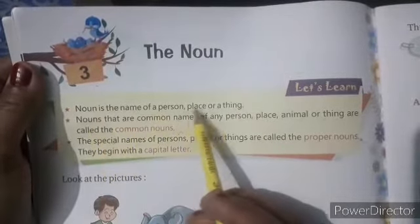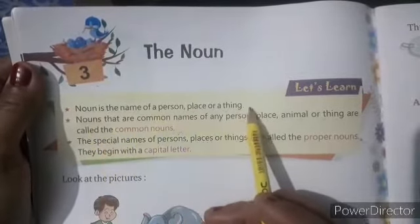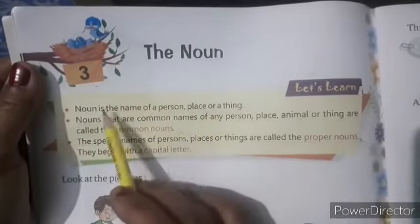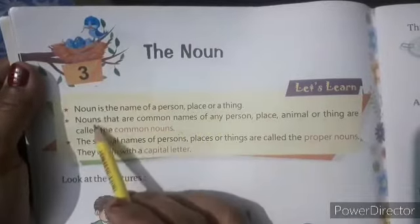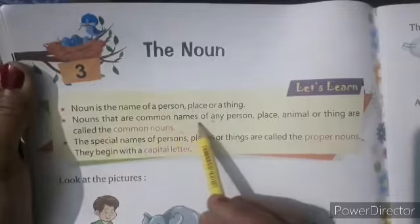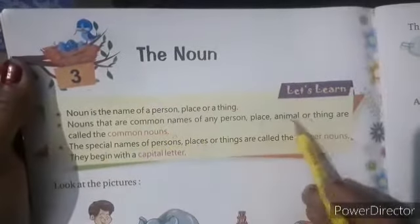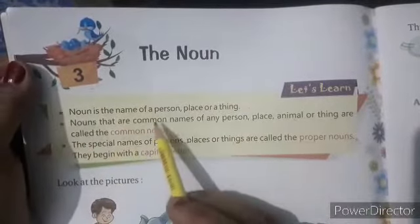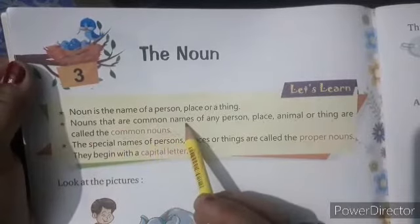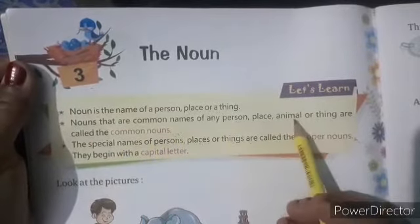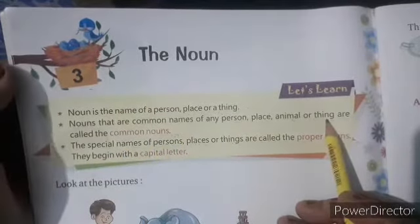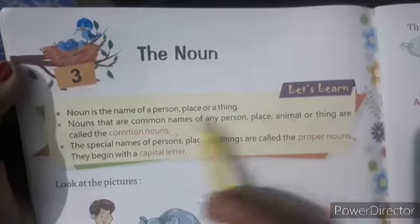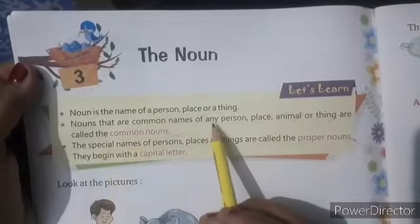Noun is the name of a person, place or a thing. SANGYA kisi ek vyakti, sthan aur vastu ka naam hota hai.